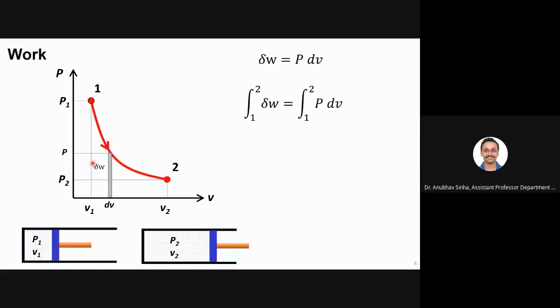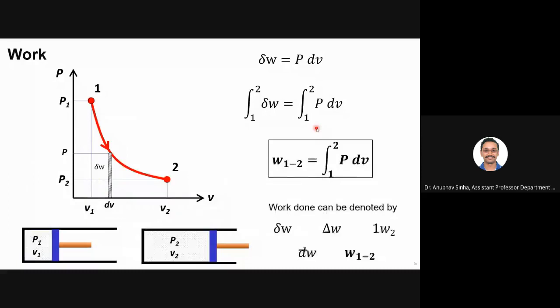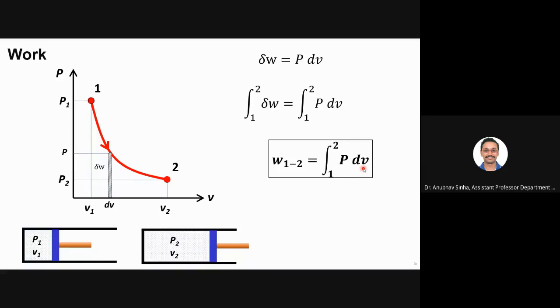So I can integrate: the integral of delta w from 1 to 2 equals the integral of P·dv from 1 to 2. This is the work done in intensive terms on a per unit mass basis from state 1 to state 2.